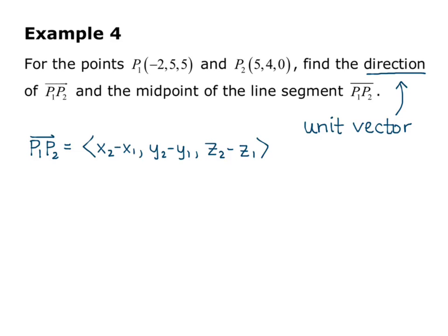So I'm going to plug in the numbers that we have. So I get 5 plus 2, comma, 4 minus 5, comma, 0 minus 5, which simplifies to 7, negative 1, negative 5. So that is vector P1 P2.